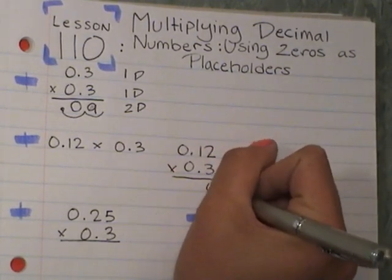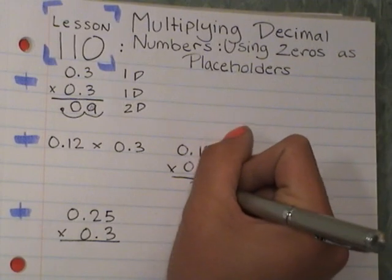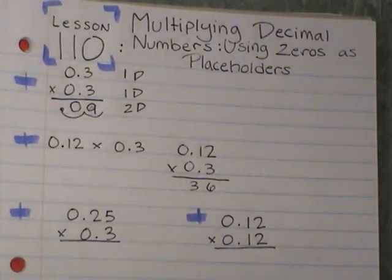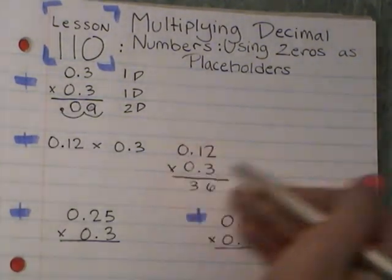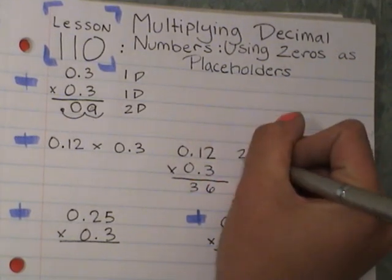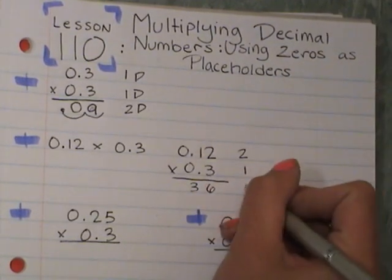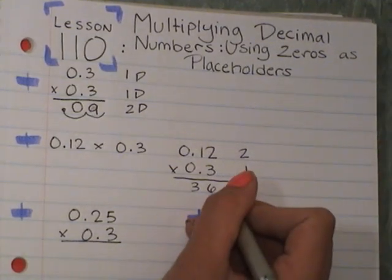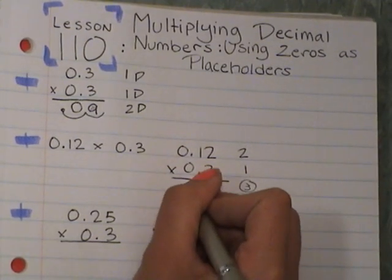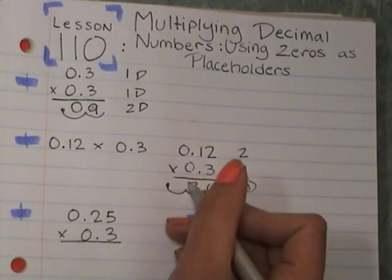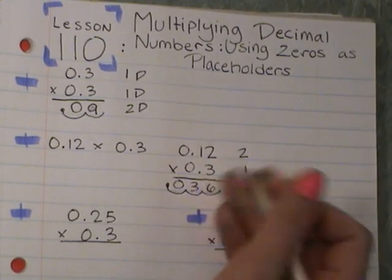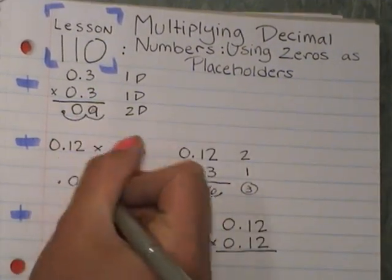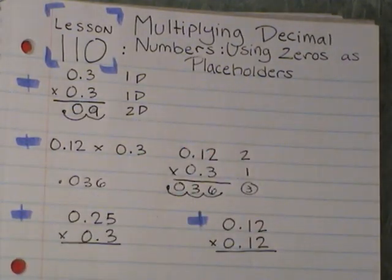3 times 2 is 6, 3 times 1 is 3, and then I'm going to count now how many places I have behind. I have 2 here, 1 here behind my decimal point, so I have to move my decimal point 3 times, 1, 2, 3, so I have to fill my placeholder with a 0. So my answer would be 36 thousandths.